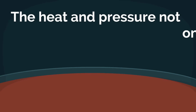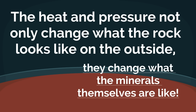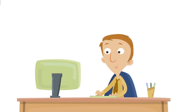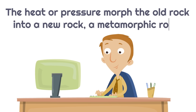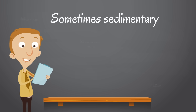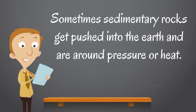The heat and pressure not only change what the rock looks like on the outside, they change what the minerals themselves are like. So the rock actually changes form — the heat or pressure morph the old rock into a new rock, a metamorphic rock. Sometimes sedimentary rocks get pushed into the Earth and are exposed to pressure or heat, then the sedimentary rock turns into a metamorphic rock. It morphs or changes into a different rock.